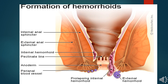Those that are above the dentate line are internal hemorrhoids and those below are external hemorrhoids. We can also see the perianal blood vessels and prolapsing internal hemorrhoids that move from the internal aspect to the outer aspect. These are the ones we will see later how they are graded.